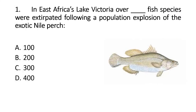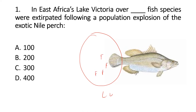In East Africa's Lake Victoria, over 200 species were extirpated following a population explosion of the exotic Nile perch. There were a lot of fish that were native to the lake where the Nile perch was introduced. Nile perch is basically a freshwater fish, also called the African snook.